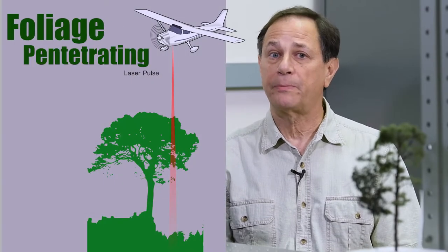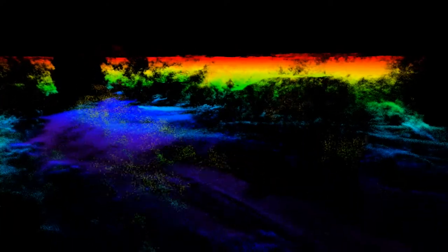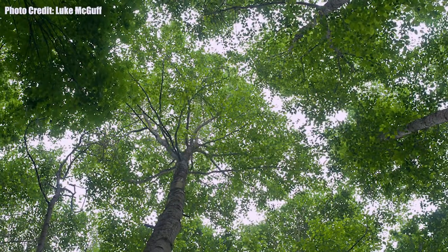There's another variation of LiDAR called foliage-penetrating LiDAR, or FOPEN for short, where it can be used to reveal detailed three-dimensional images of objects that are hidden behind a partial obscuration, such as a tree canopy.